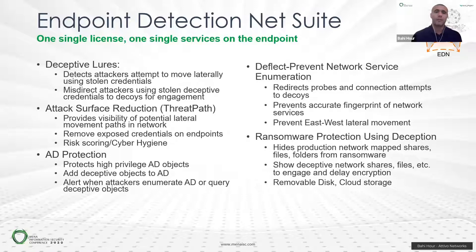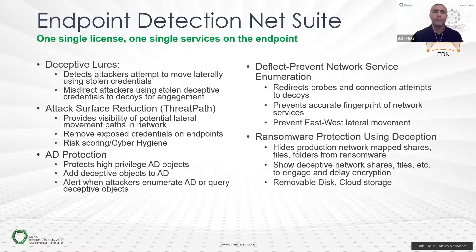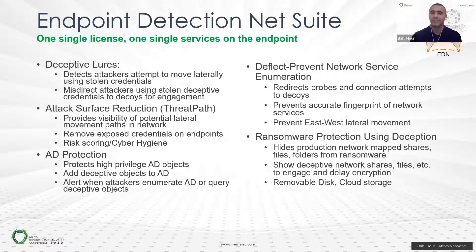The second module is called ThreatPath. It performs attack surface reduction on the endpoint. As we inject deceptive objects, we also need visibility on the real exposed cached credentials on endpoints that present high risk in terms of harvesting, lateral movement, and connecting to critical assets. So we have continuous real-time visibility on every account that is cached — especially privileged accounts within the network. If they are cached on normal user VLANs, that is definitely high risk, and if that machine gets compromised, the attacker will have a strong option for a successful lateral movement to critical assets.